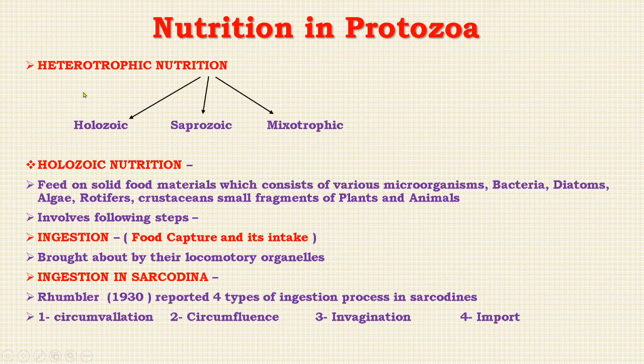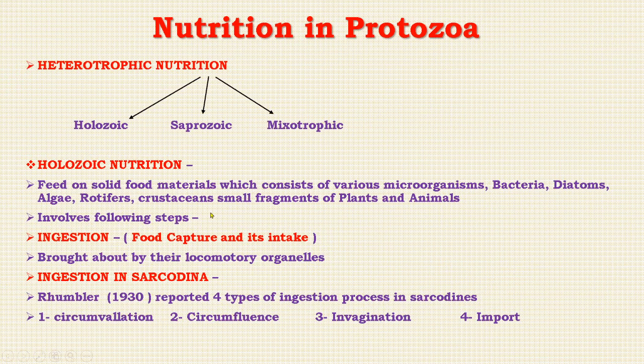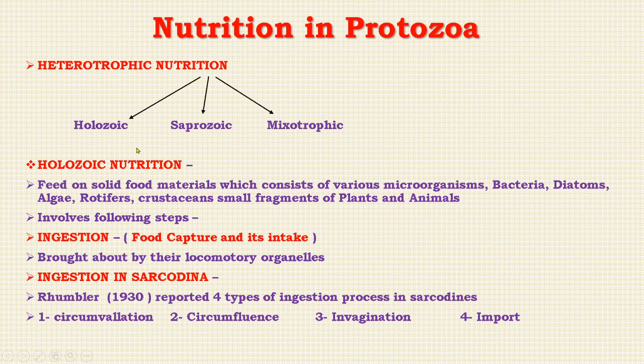Holozoic nutrition is animal-like nutrition. Protozoans feed on solid materials consisting of various microorganisms such as bacteria, diatoms, algae, rotifers, crustaceans, and small fragments of plants and animals. This nutrition involves many steps such as ingestion, digestion and egestion.